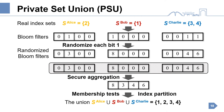Each chosen client first represents its real index set as a bloom filter, and then replaces each bit 1 with a random integer while keeping each bit 0 unchanged. Such a randomization process is to hide the count number of each index in the union. The randomized bloom filters are secretly aggregated under the mediation of the untrusted cloud server. From the aggregated bloom filter, the cloud server can recover the union by doing membership tests over the full index set.